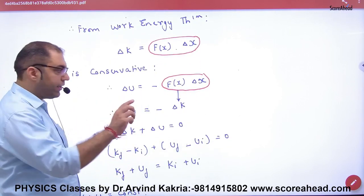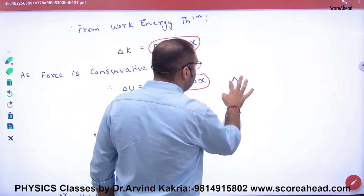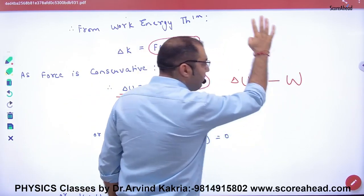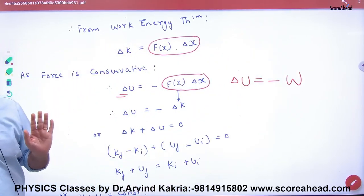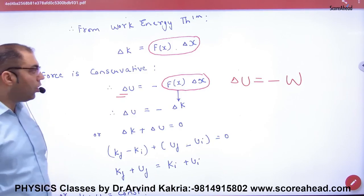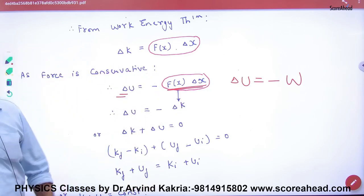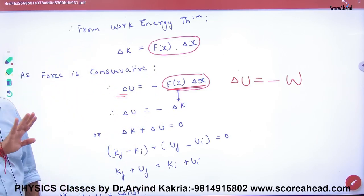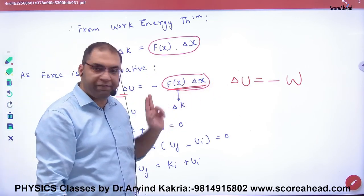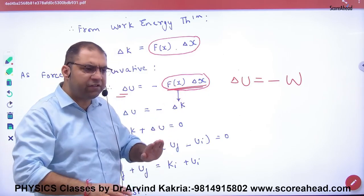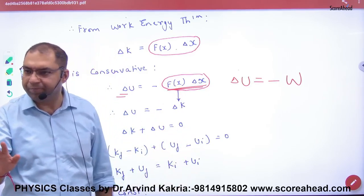We have to start. The change in potential energy, ΔU, is minus W. We have done this, right? And what is work done? Force into displacement. We have done this. What is work done? I have put F into Δx, where F is the function of x. What is the step? Clear?